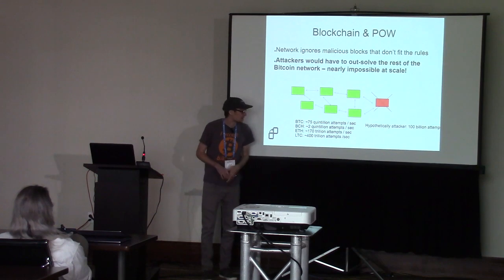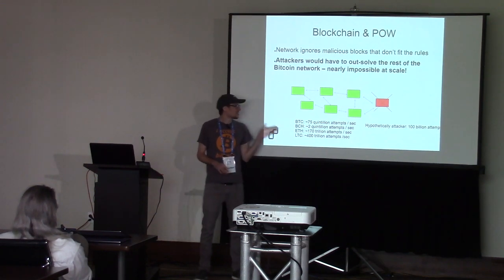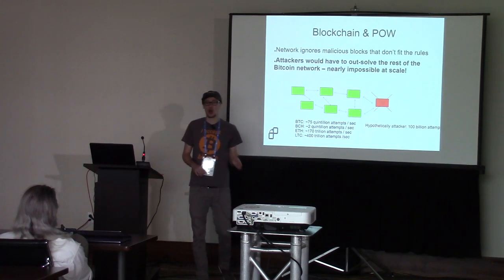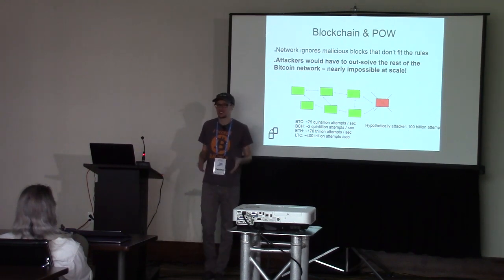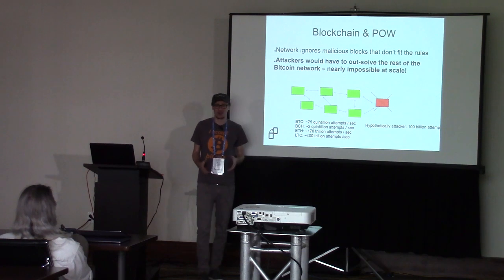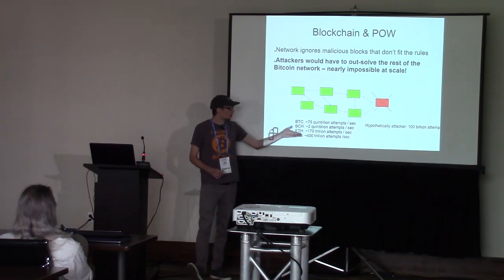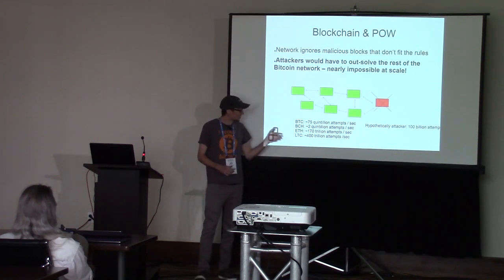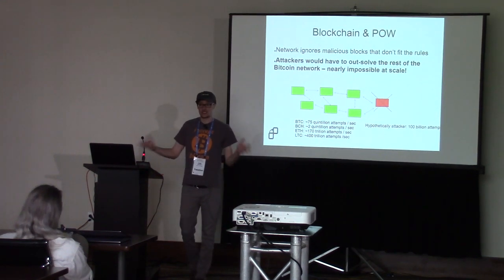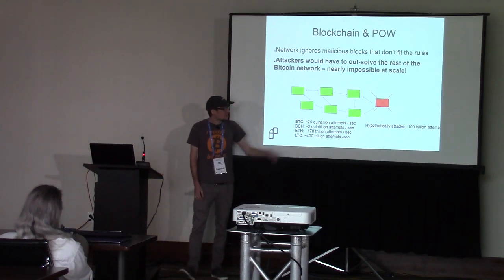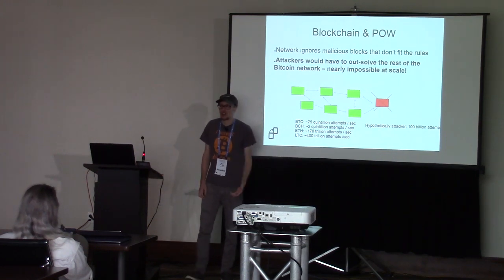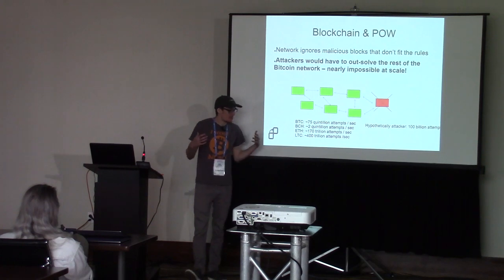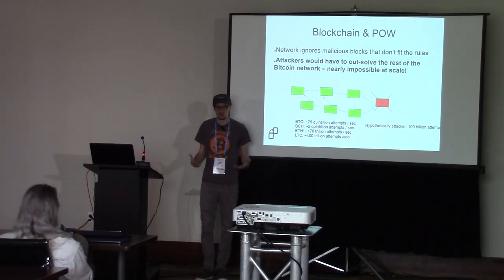At the time these slides were made, Bitcoin had 75 quintillion proof of work guesses per second, and it takes on average about 10 minutes to find a solution. Bitcoin Cash has about two quintillion, and Ethereum and Litecoin are in the hundreds of trillions. Even with a data warehouse full of mining ASICs, pulling off a fraudulent action on these decentralized blockchains is considered impossible at scale.